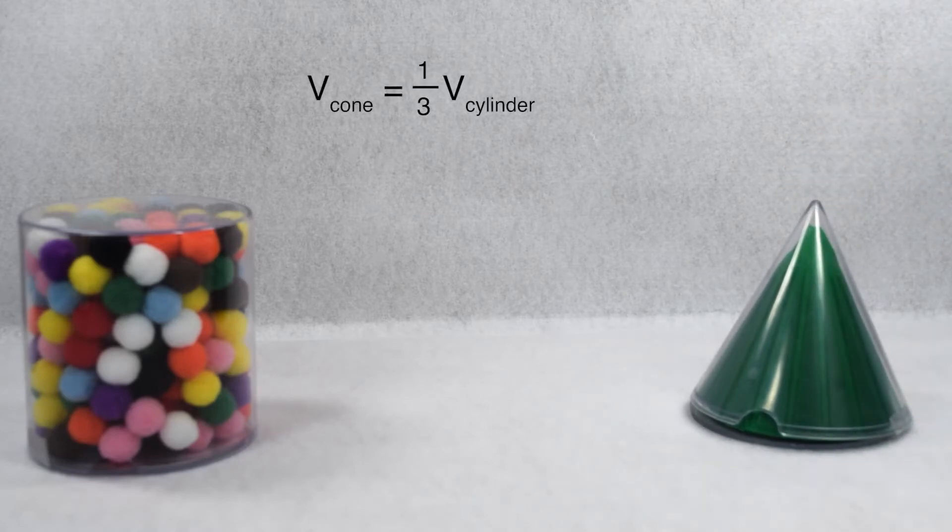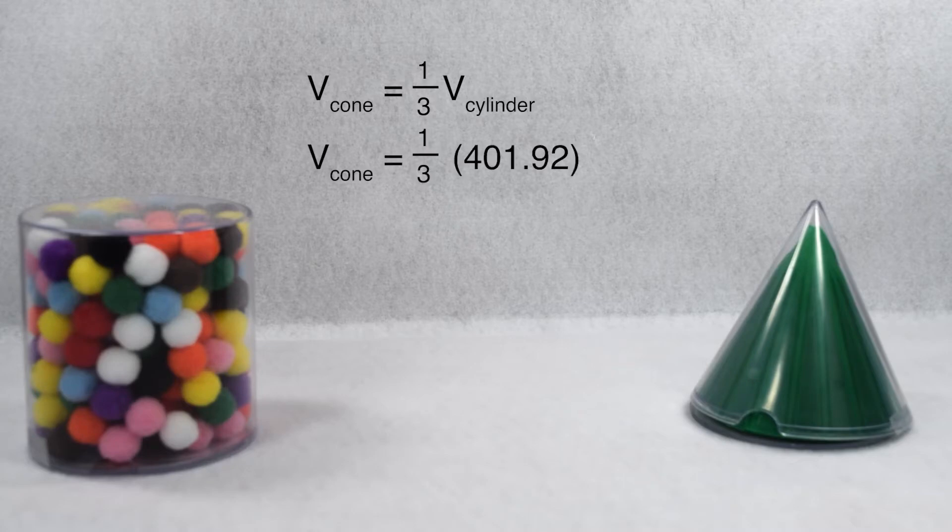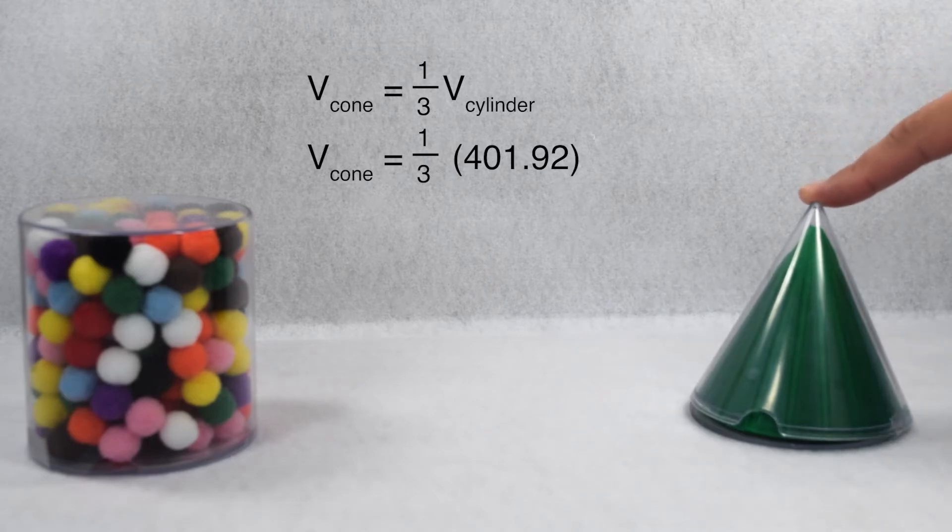Well, we know the volume of the cylinder is 401.92 cubic centimeters. So we're going to take one-third of that. That tells us the volume of our cone is 133.97 cubic centimeters.